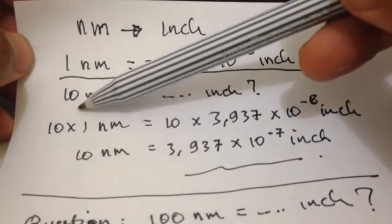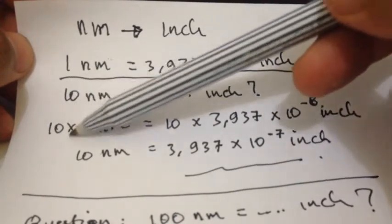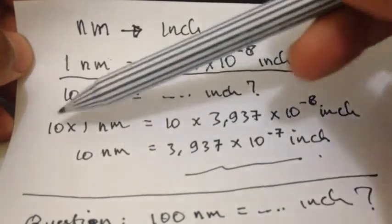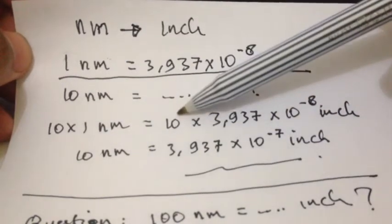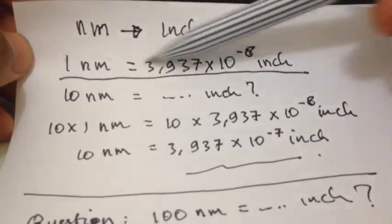To solve this problem, first thing that I need to do is, we put 10 from here, and we multiply it with the basic rule, 1 nanometer, and it's equal to, because we have 10 on the left, we put a 10 as well on the right, and we multiply it with this number.